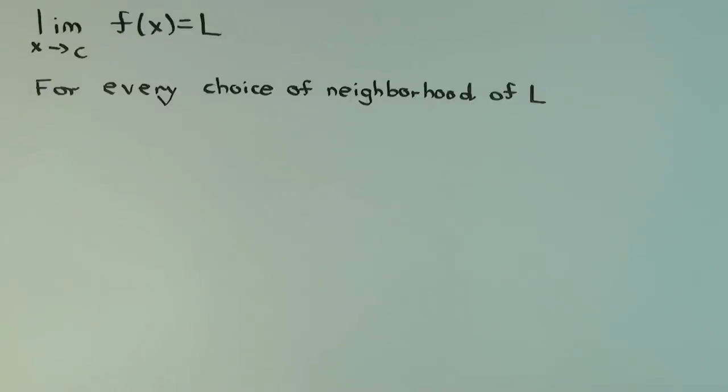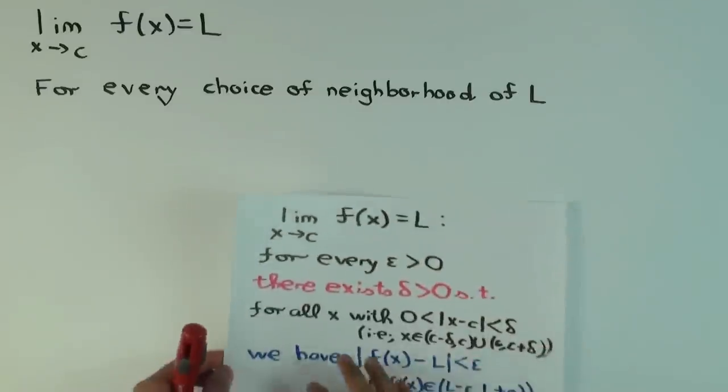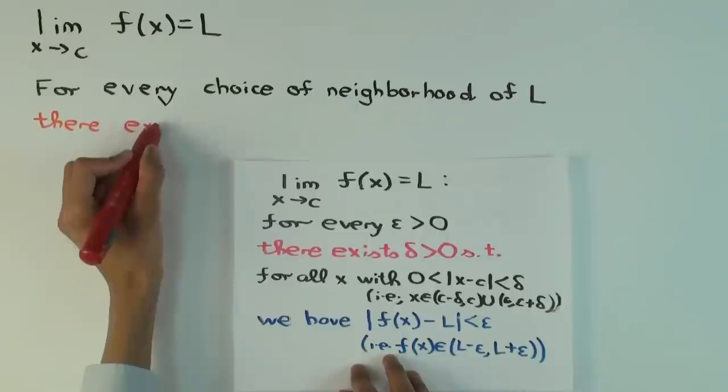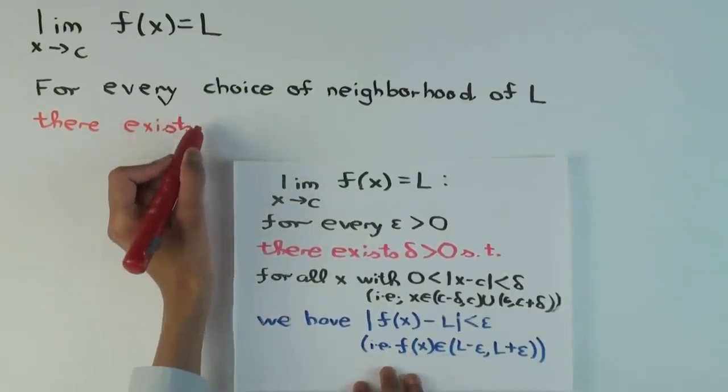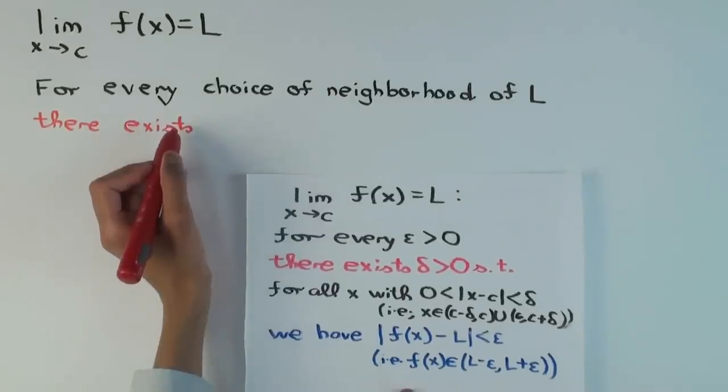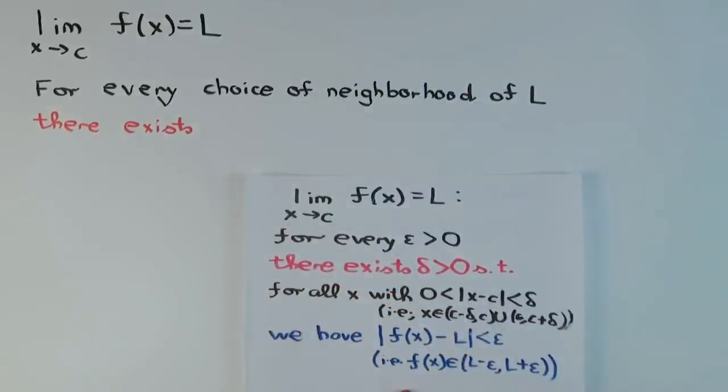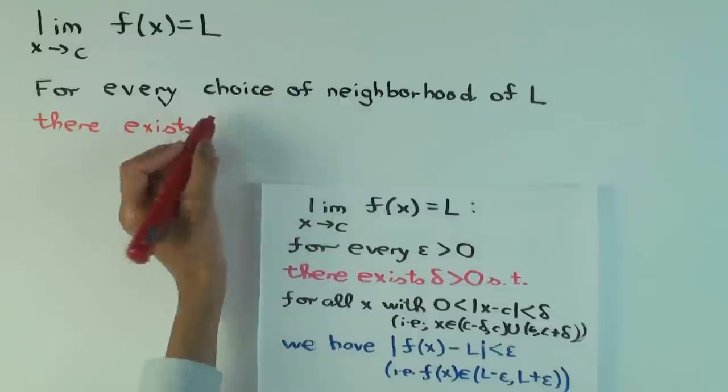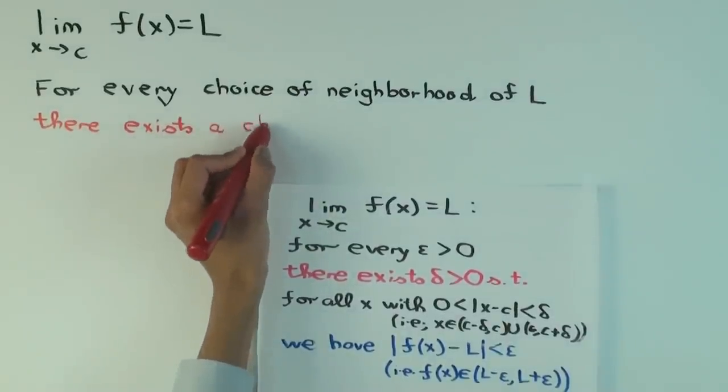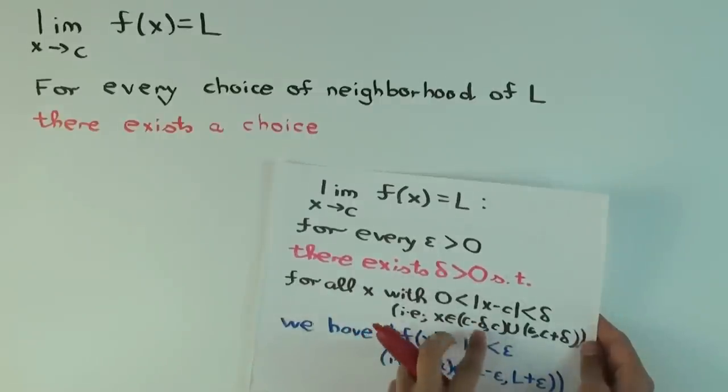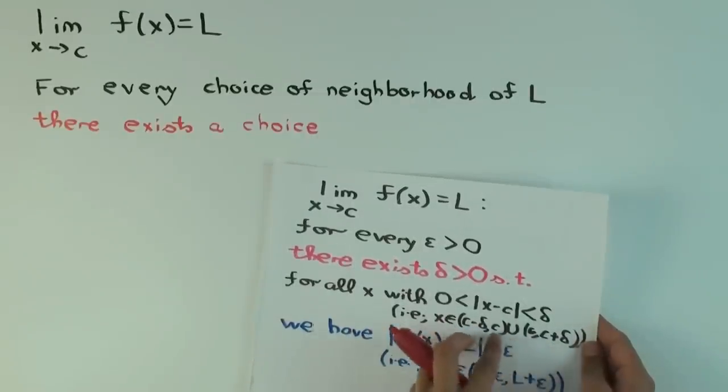So the term neighborhood, I haven't really defined. But that's the point. It's a general conceptual definition. There exists... what should come next? Well, that's what the concrete definition says. But what would the conceptual thing say? A neighborhood of what? Of C. Of the thing, of the domain thing. Because the goal of picking delta is to find a neighborhood of C.